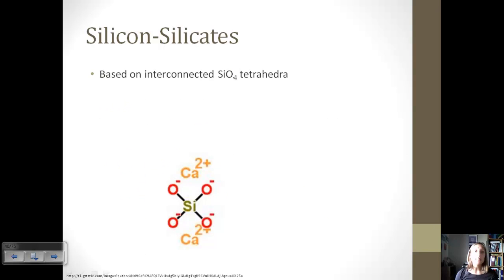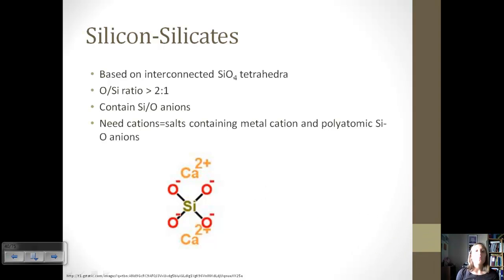Another form of silicon is a silicate. And again, this is based on the SiO4 structure, but it's a little bit different. The O-to-Si ratio is greater than 2-to-1, and part of the reason for that is because we have SiO anions. So when we put that SiO4 structure together, because the ratio is not 2-to-1, it creates this unbalanced charge, and so we have these negatively charged compounds. Well, in order to balance that out, we need some cations, and so we take any type of salt. So, you know, calcium is the example here. We need a metal cation, and then the polyatomic SiO anions, and that creates the salt. And so here you can see that we have the Ca2+ cation bonding to create that network.